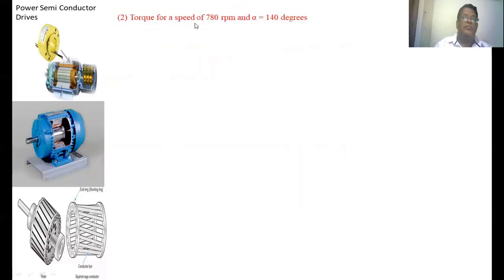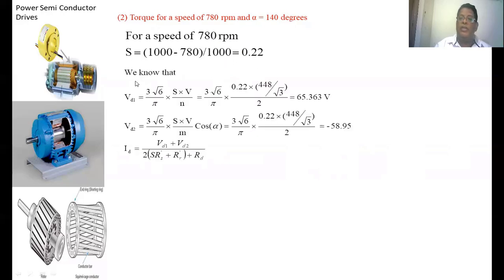(2) Torque for a speed of 780 rpm and α = 140°. For a speed of 780 rpm, slip S = (1000-780)/1000 = 0.22. We know that Vd1 = (3√6/π)·(S·V/n). Substituting all the values, we get Vd1 = 65.363V. Similarly, the DC voltage from the second converter Vd2 = (3√6/π)·(S·V/m)·cos(α). Substituting all values, we get -58.95V.